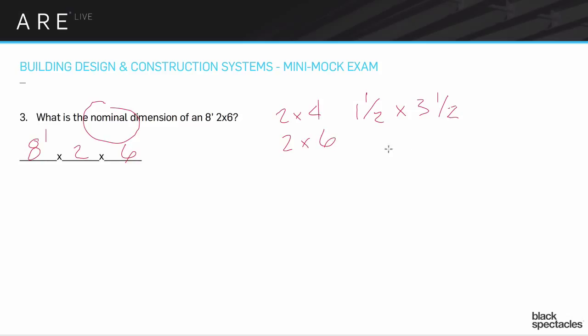If that was a 2x6, like we were talking about here, that would be 1.5 by 5.5. If that's a 2x8, this is the tricky part, it goes to 1.5 by 7.25. And then all the other ones after that, the tens and the twelves would all go to 9.25 and 11.25.